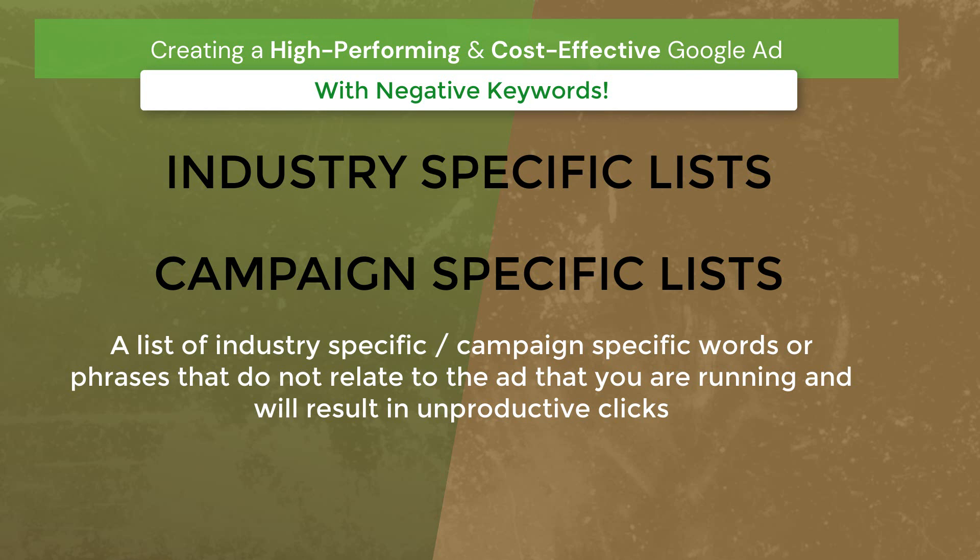Depending on how you create your campaigns, these lists can be applied to the entire account, or at the campaign level, or at the ad group level. That's another reason why you're making different lists — you can apply them to different levels of your campaign or your account.